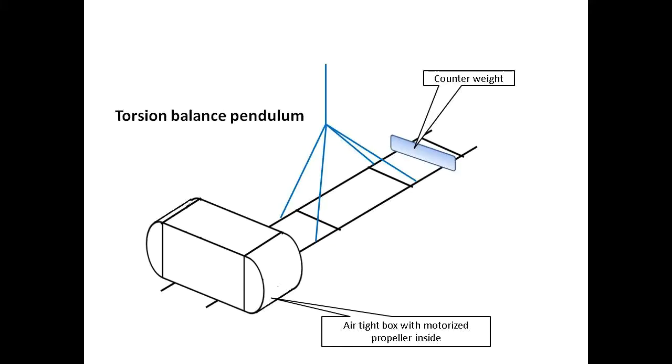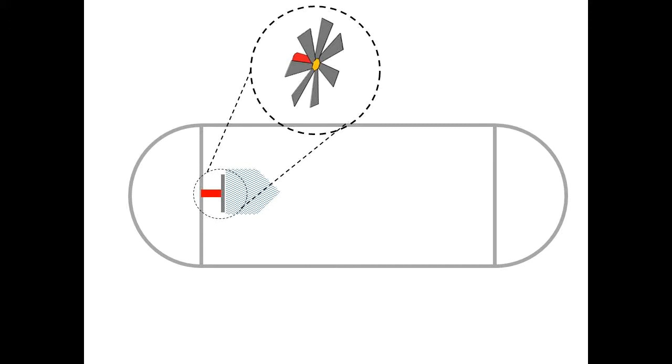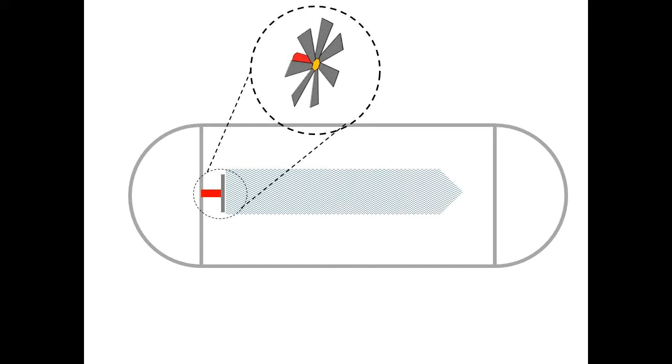We have a torsion balance pendulum. On one side we have an airtight box with a motorized propeller inside. On the other side we have a counterweight. Inside the box we put a propeller, a motorized propeller. What will happen when we turn the propeller on inside the box?